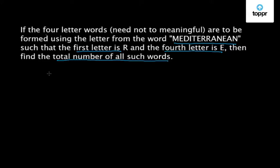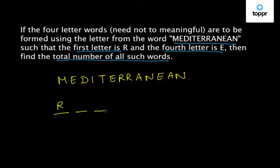Let us try to solve this problem. We are given the word Mediterranean and we have been asked to form four letter words using the letters of this word. We have already been given that the first letter is R and the last letter, that is the fourth letter, is E. We are left with only two places and from this word one R and one E has been already used. What are we left with now?